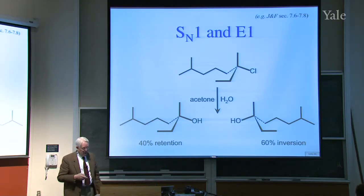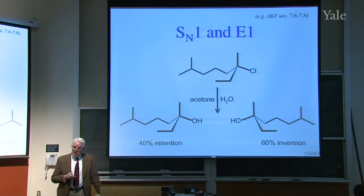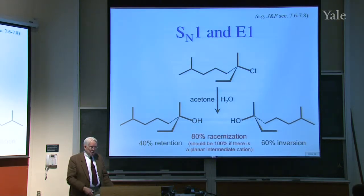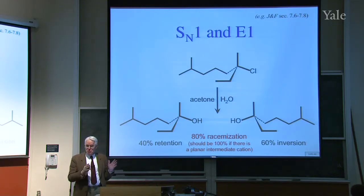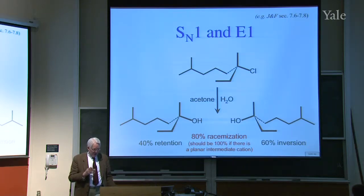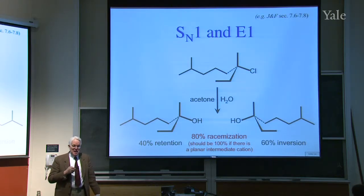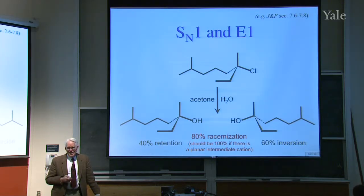But in fact, when you do the experiment, you get 40% retention and 60% inversion. So 80% is racemization. That's what you expect. But the other 20% is excess inversion. It should have been 100% if there was a planar intermediate. Can anybody see how you might explain this? How could it be that you form a cation but it's not equally attacked from the two faces?